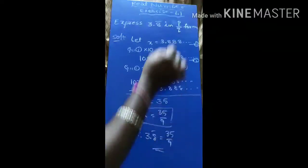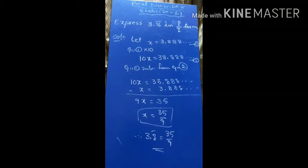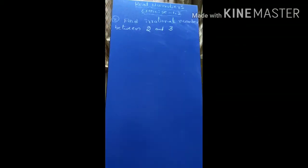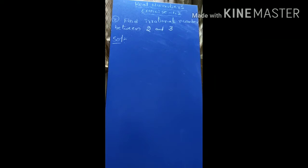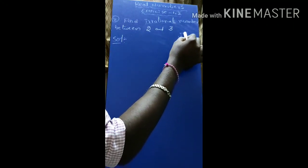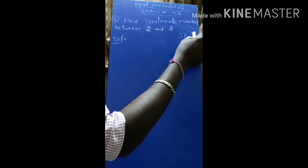So it is the rational number in P by Q form. Next question is from real numbers in exercise 1.2: find irrational numbers between 2 and 3. Irrational numbers have the form of root — root P, root Q, like that.